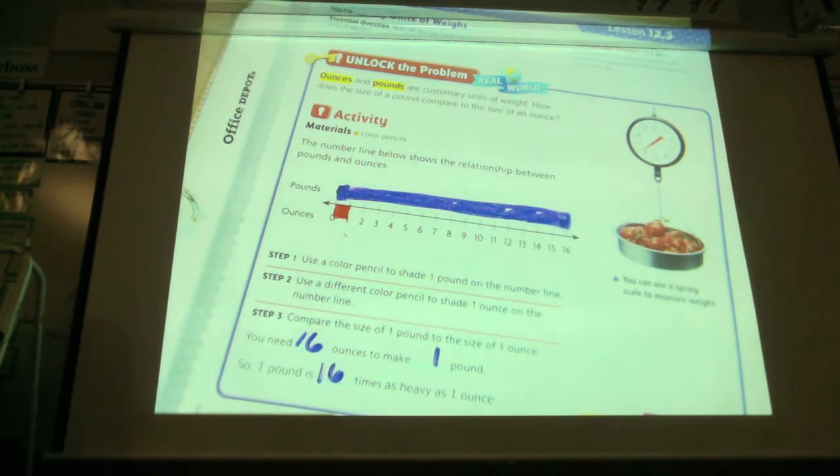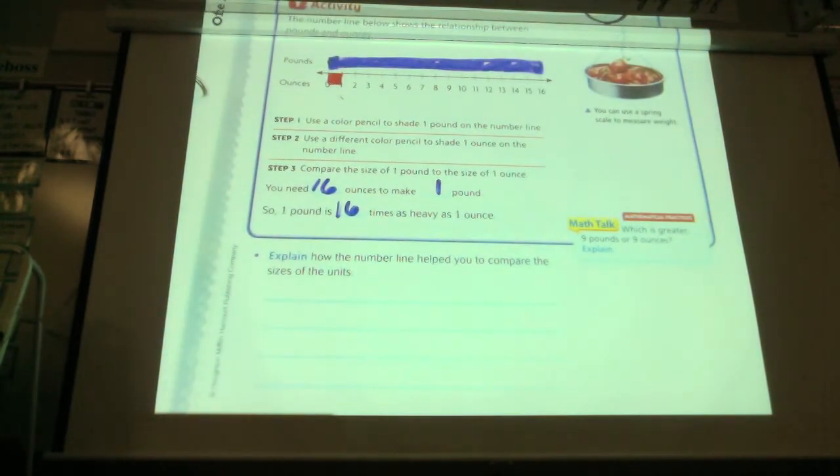How does the number line help you compare the size of each of the units? Who would like to explain how the number line helped you compare the size of the units? It helps because you can visually see one ounce and one pound. Very good. It helps because I could understand which side was ounce and which side was pounds. It helps me because it tells me how much a pound is, which is 16 ounces. Very good. All those would work. It helps you kind of visualize an ounce size compared to a whole pound too.